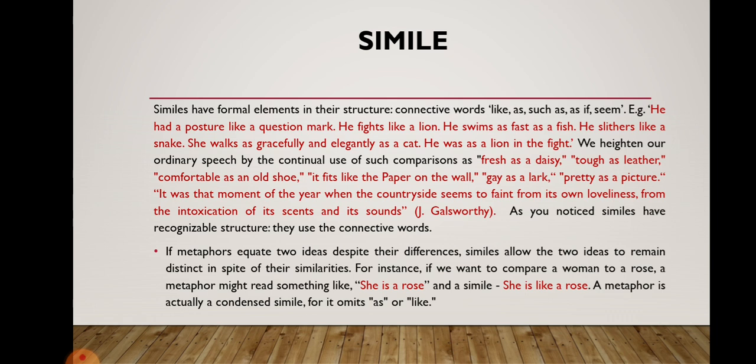The semantic nature of the simile-forming elements 'seem' and 'as if' is such that they only remotely suggest resemblance. Quite different are the connectives 'like' and 'as' — these are more categorical and establish quite straightforwardly the analogy between two objects. Similes have a recognizable structure using connective words. If metaphors equate two ideas despite their differences, similes allow the two ideas to remain distinct in spite of their similarities. For instance, a metaphor might read 'she is a rose,' while a simile reads 'she is like a rose.' A metaphor is a condensed simile, omitting 'as' or 'like.'